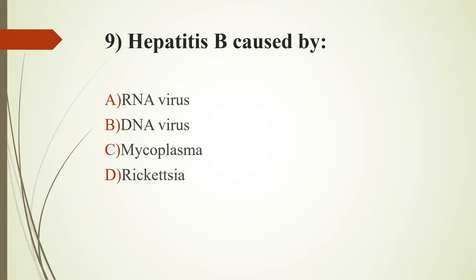Ninth question: Hepatitis B is caused by which option? Option A, RNA virus. Option B, DNA virus. Option C, Mycoplasma. Option D, Rickettsia. The answer is Option B, DNA virus.